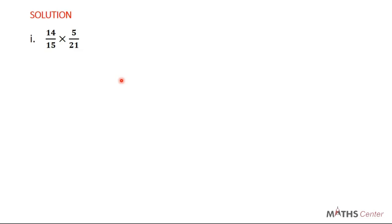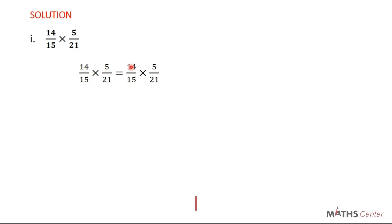Before we multiply the numerators and the denominators, if we have common factors, we have to cancel them out. Remember that a common factor on the numerator will cancel a common factor on the denominator. A common factor on the numerator can't cancel a common factor on the numerator. The numerators cancel those on the denominators and vice versa. So you check around and see if there are common factors. We can see that 5 on the numerator and 15 on the denominator share a common factor, and 14 on the numerator and 21 on the denominator share a common factor of 7.